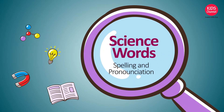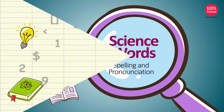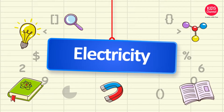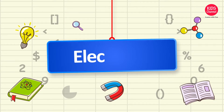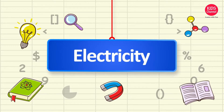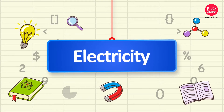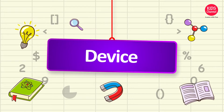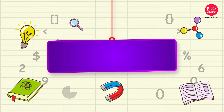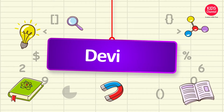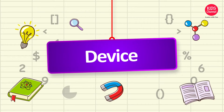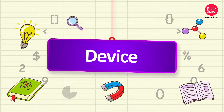Science words: spellings and pronunciation. Today we are learning some science words related to electricity. Let us begin. Electricity: E-L-E-C-T-R-I-C-I-T-Y. Device: D-E-V-I-C-E.